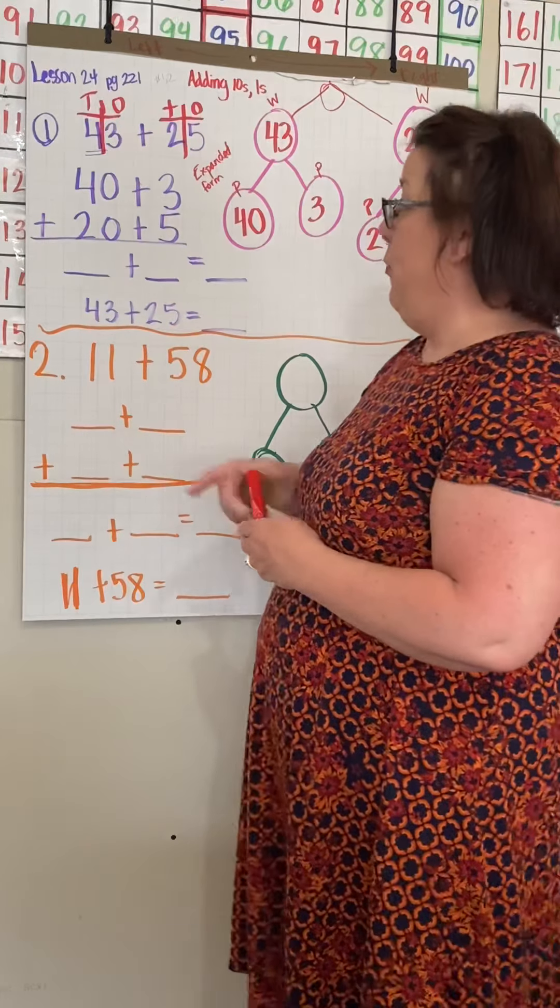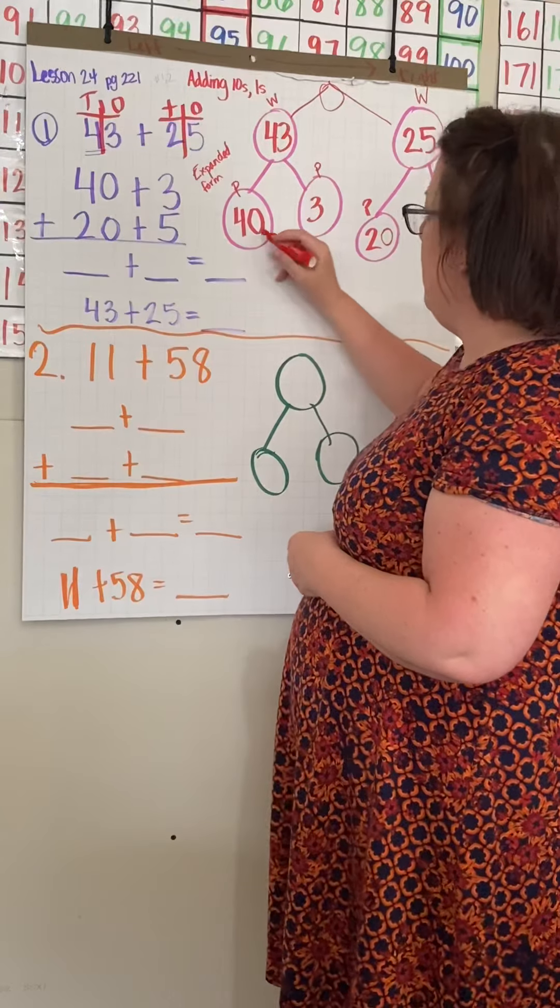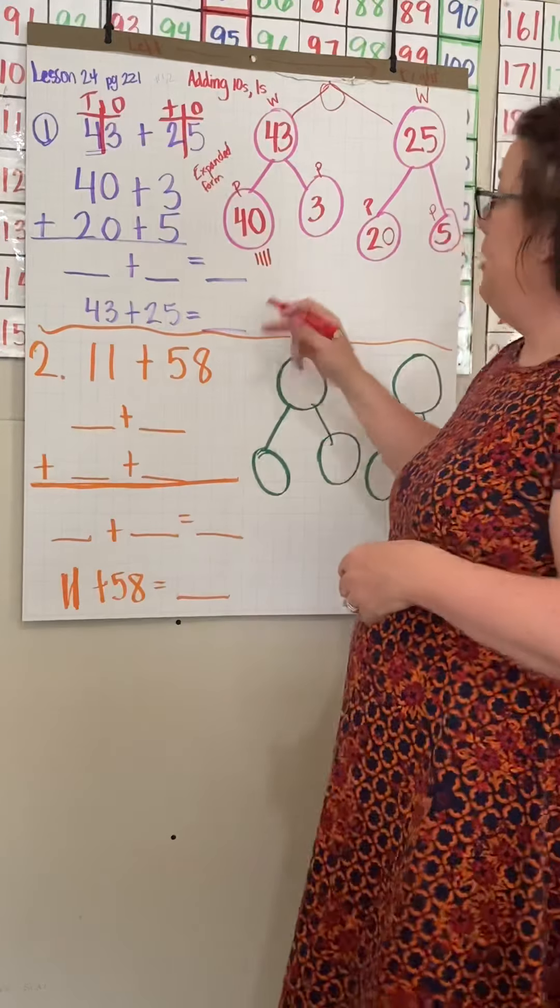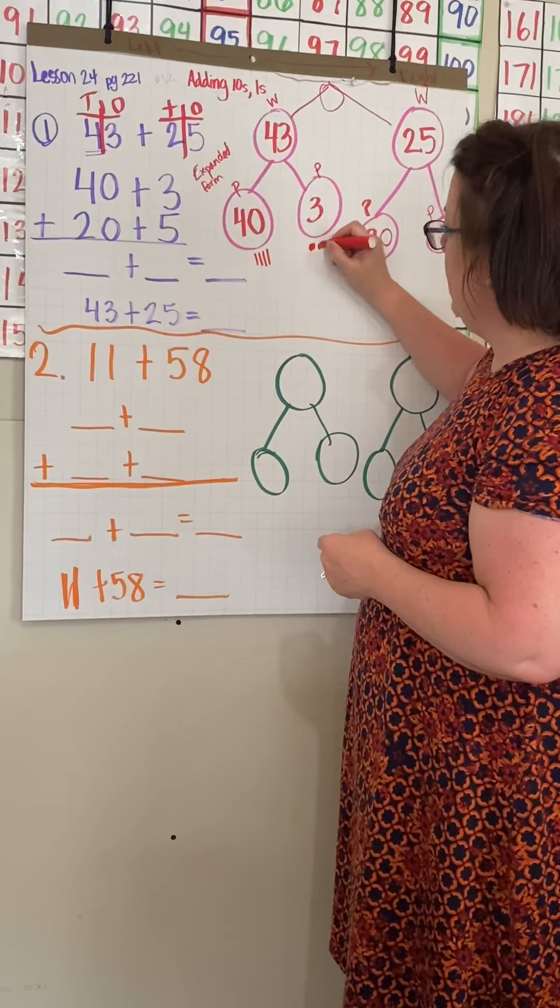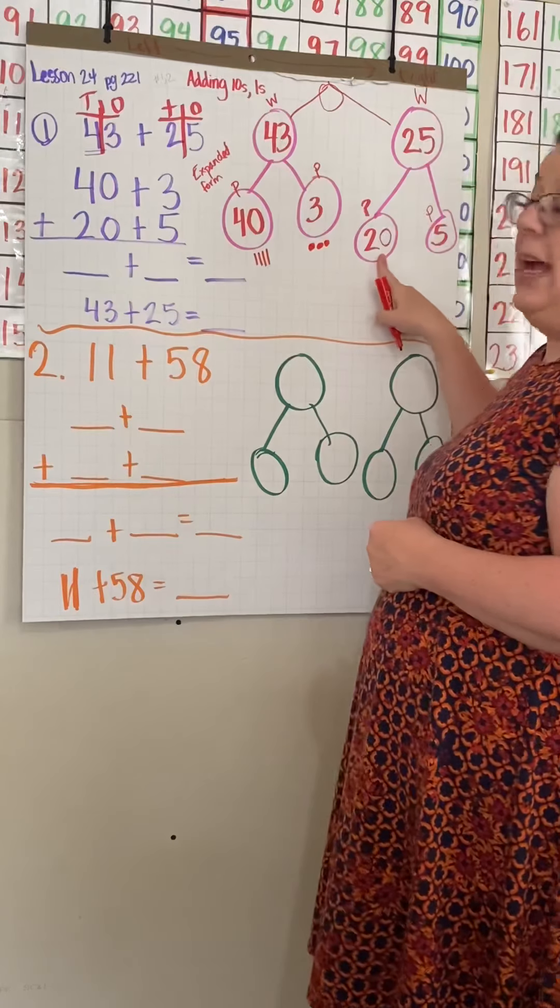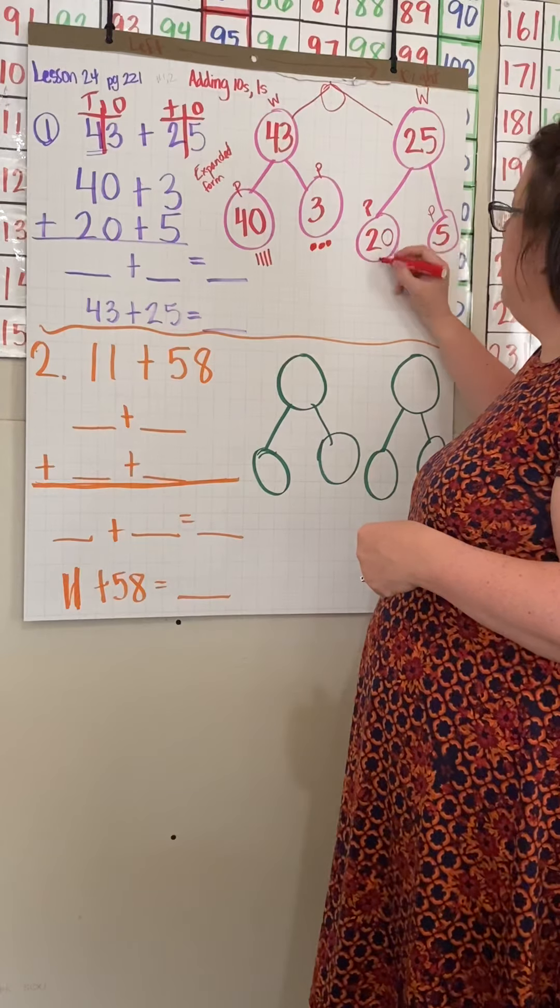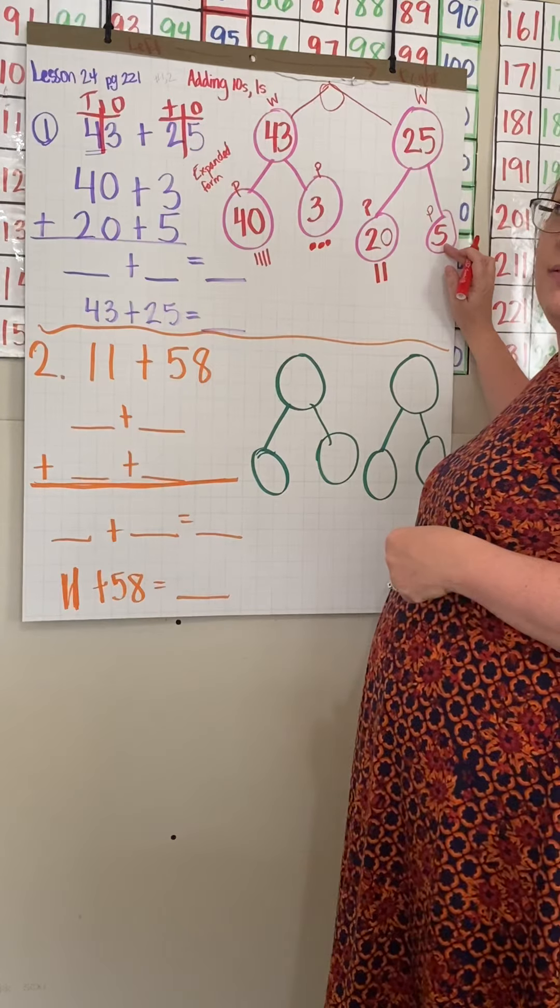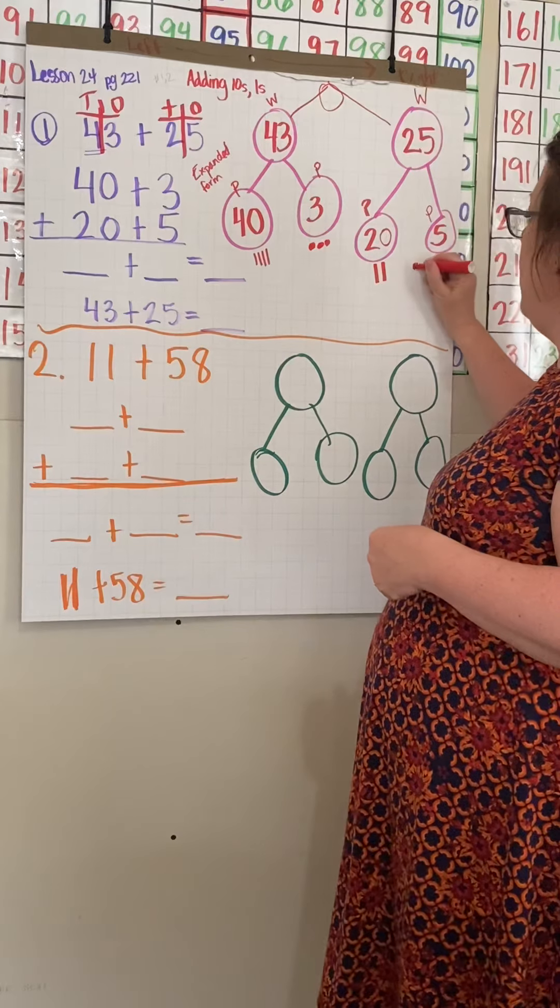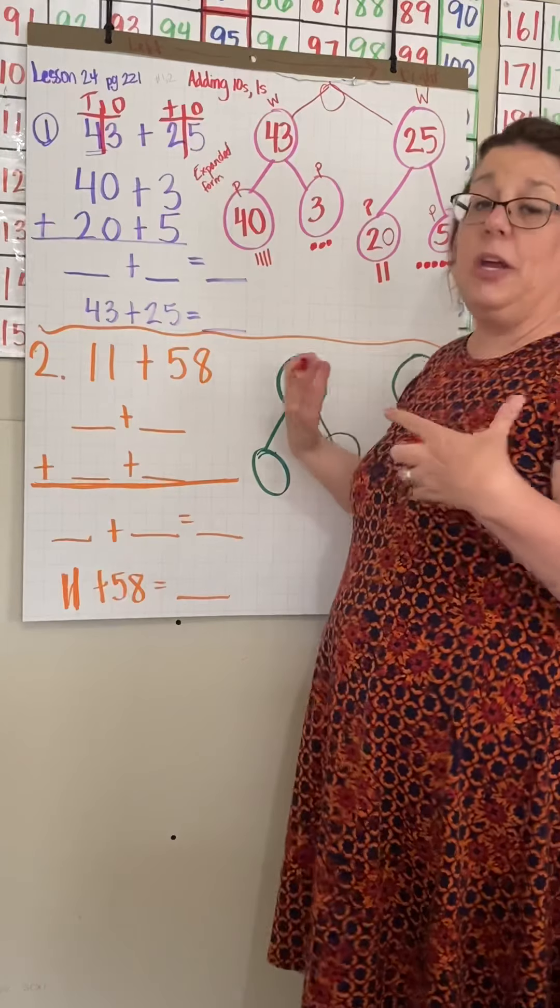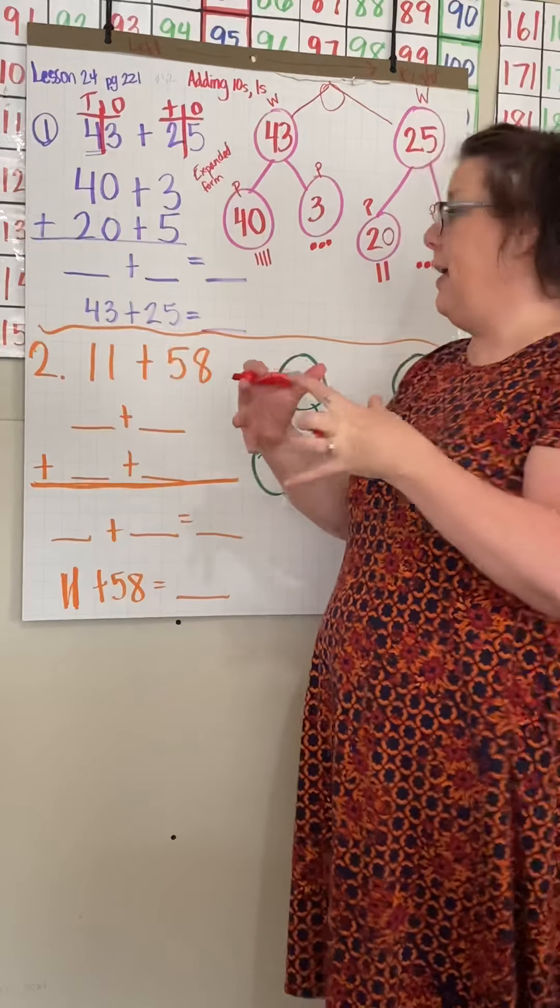So if we have 40 plus three, that means we have 10, 20, 30, 40 plus three ones. One, two, three. And then I have 20. Let's count by tens. 10, 20. And how many ones? Five ones. One, two, three, four, five.